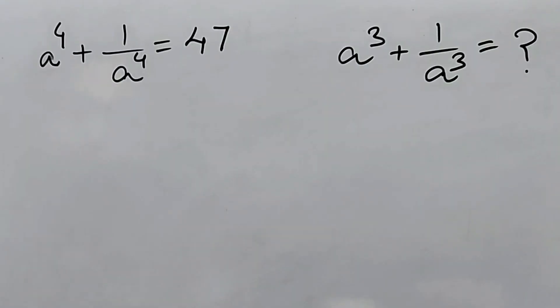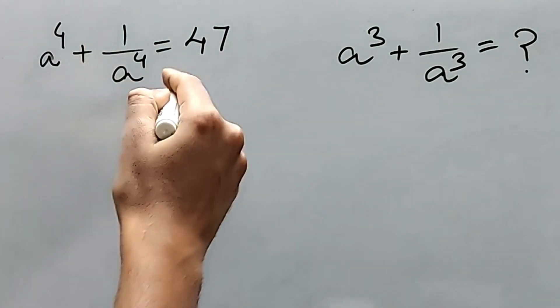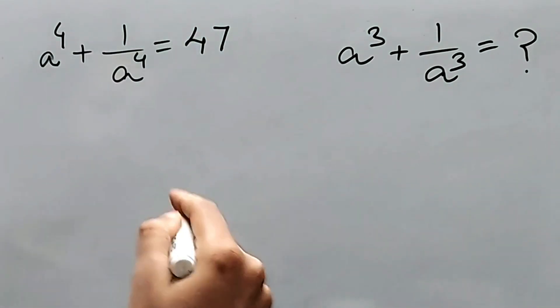a^4 + 1/a^4 = 47, and we have to find the value of a^3 + 1/a^3. What will be the approach?